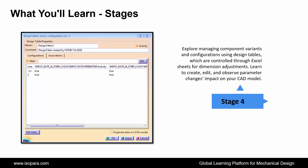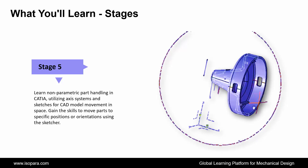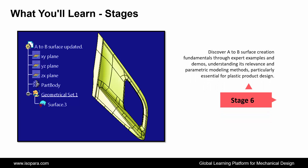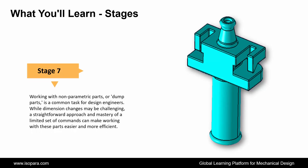Fifth, learn non-parametric part handling in CATIA, utilizing axis systems and sketches for CAD model movement in space. Gain the skills to move parts to specific positions or orientations using the sketcher. Next, discover A-to-B surface creation fundamentals through expert examples and demos, understanding its relevance and parametric modeling methods, particularly essential for plastic product design. Working with non-parametric parts, or dump parts, is a common task for design engineers. While dimension changes may be challenging, mastery of a limited set of commands can make working with these parts easier and more efficient.